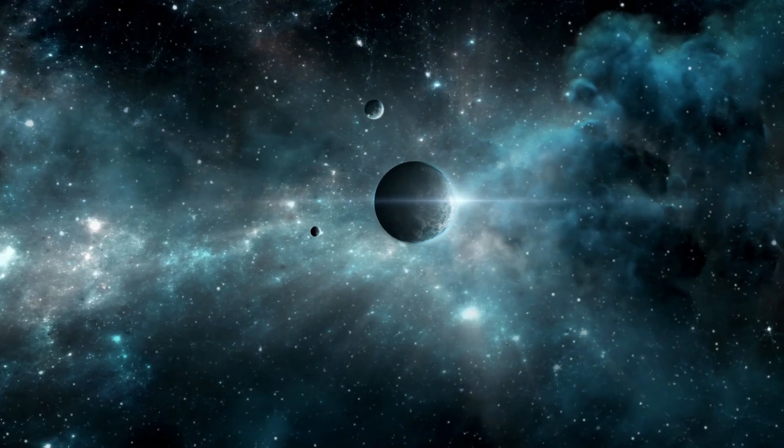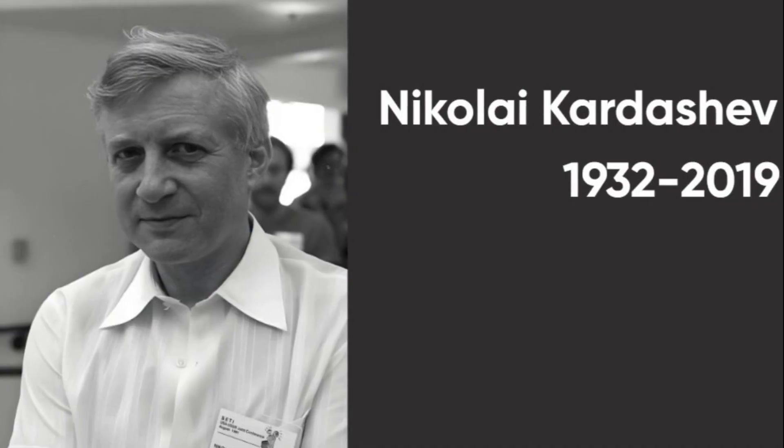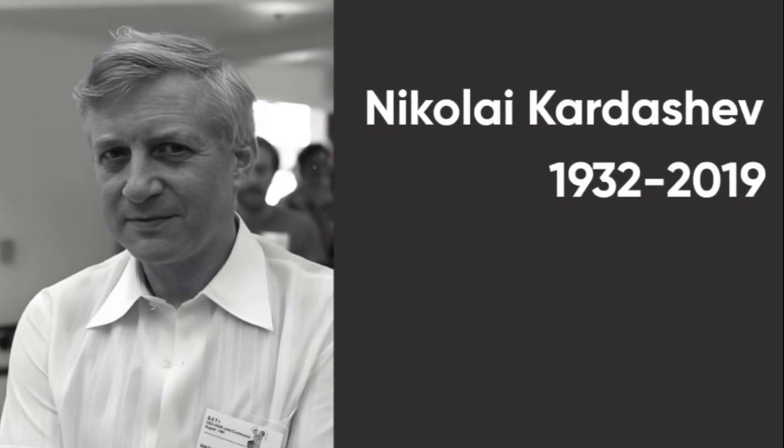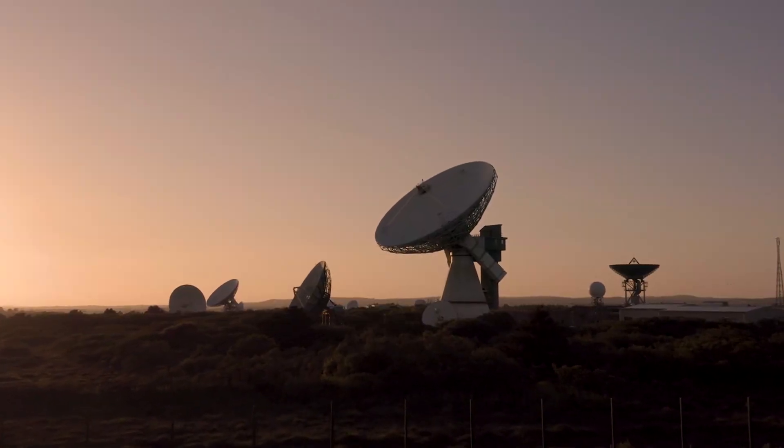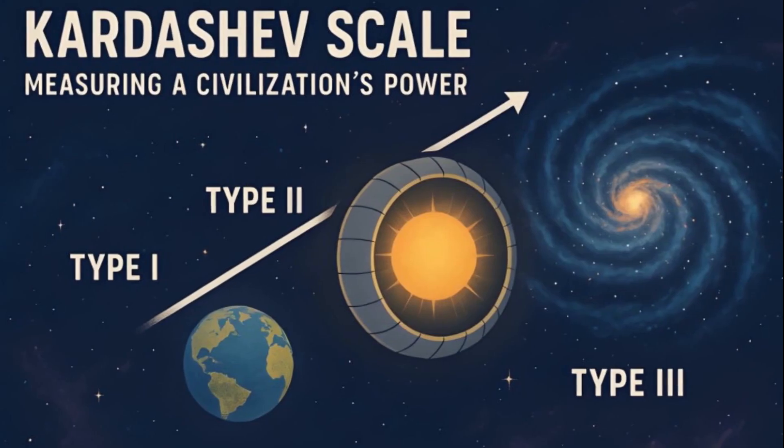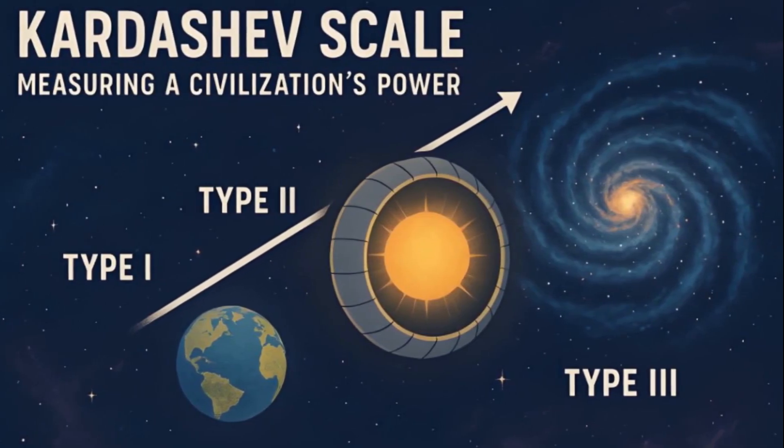Back in 1964, a Soviet astronomer named Nikolai Kardashev proposed a bold idea. Kardashev was a leading figure in Soviet astrophysics, best known for his work on cosmic radio waves and the search for extraterrestrial intelligence. He defined three main levels: Type I, Type II, and Type III.